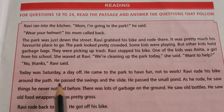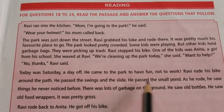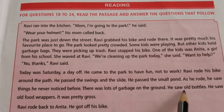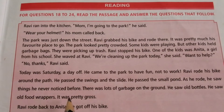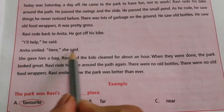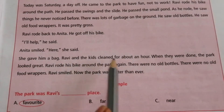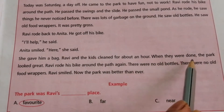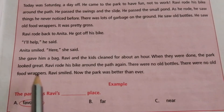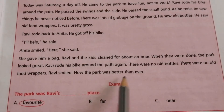Ravi stopped his bike. One of the kids was Anita, a girl from his school. She waved at Ravi. 'We were cleaning up the park today,' she said. 'Want to help?' 'No thanks,' Ravi said. Today was Saturday, a day off. He came to the park to have fun, not to work. Ravi rode his bike around the path. He passed the swings, the slide, and the small pond. As he rode, he saw things he never noticed before — lots of garbage on the ground, old bottles, and old food wrappers. It was pretty gross. Ravi rode back to Anita. 'I will help,' he said. Anita smiled and gave him a bag. Ravi and the kids cleaned for about an hour. When they were done, the park looked great. Ravi rode around again — no old bottles, no food wrappers. Now the park was better than ever.